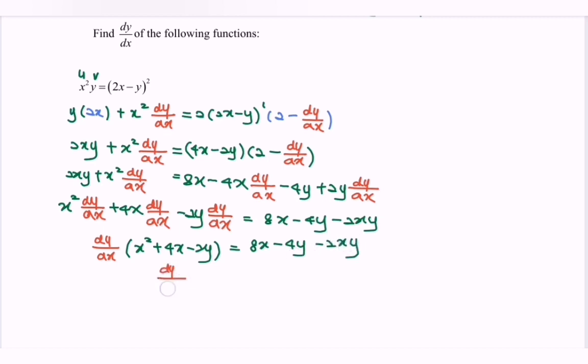Finally, we have dy/dx equals to 8x minus 4y minus 2xy over x² plus 4x minus 2y.